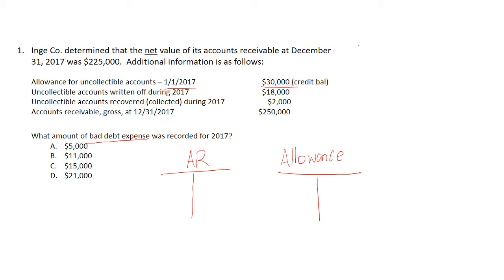The beginning balance of allowance is $30,000. The write-off is the amount of money that we cannot collect back, so we need to debit allowance and credit accounts receivable for $18,000. As for the recovery, cash is collected back from accounts that were previously written off, so we reverse the write-off: debit cash and credit allowance for $2,000. Finally, we have an ending balance of accounts receivable of $250,000.